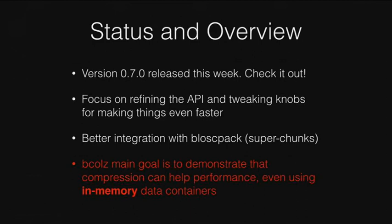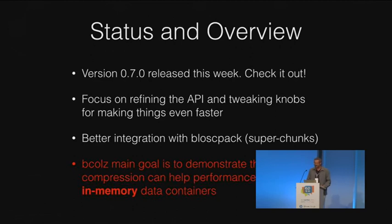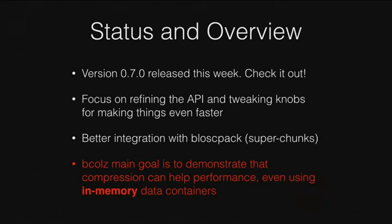Let me finish with the status and overview of B-calls. I released version 0.7.0 this week, so you should check it out. We are focused on refining the API and tweaking knobs to make things even faster — not interested in developing many new features, but in making the containers and iterators much faster. We also need to address better integration with Bloscpack. I am in contact with Valentin to implement what we call 'super chunks,' because every chunk right now is a file on the file system when using persistency, and with many chunks that wastes a lot of inodes. The idea is to tie together different chunks into super chunks to avoid this overhead.